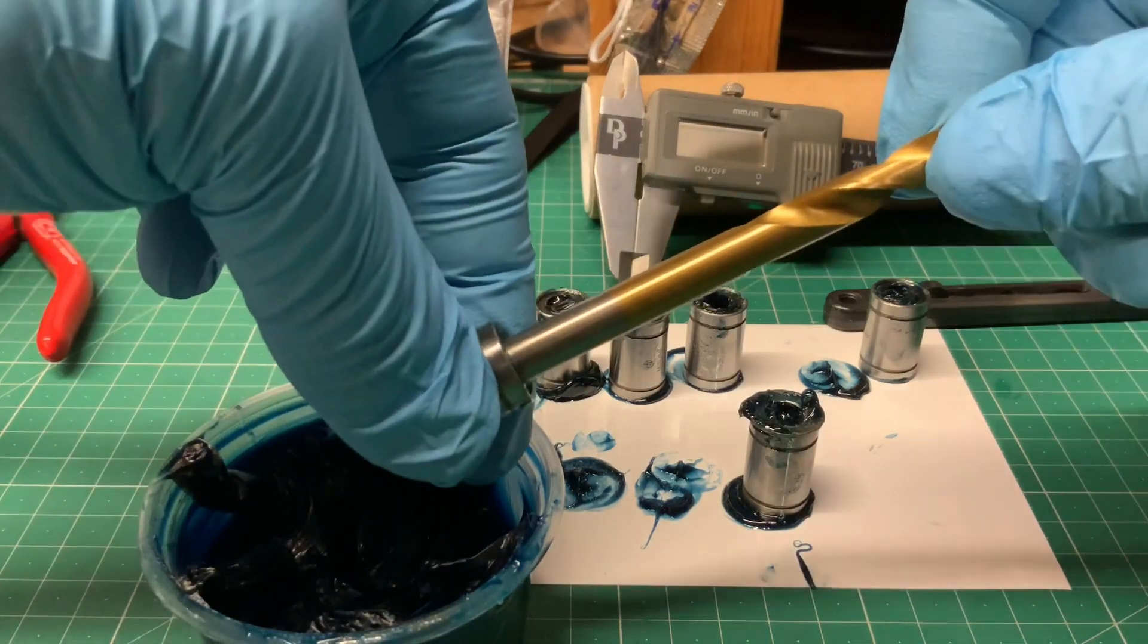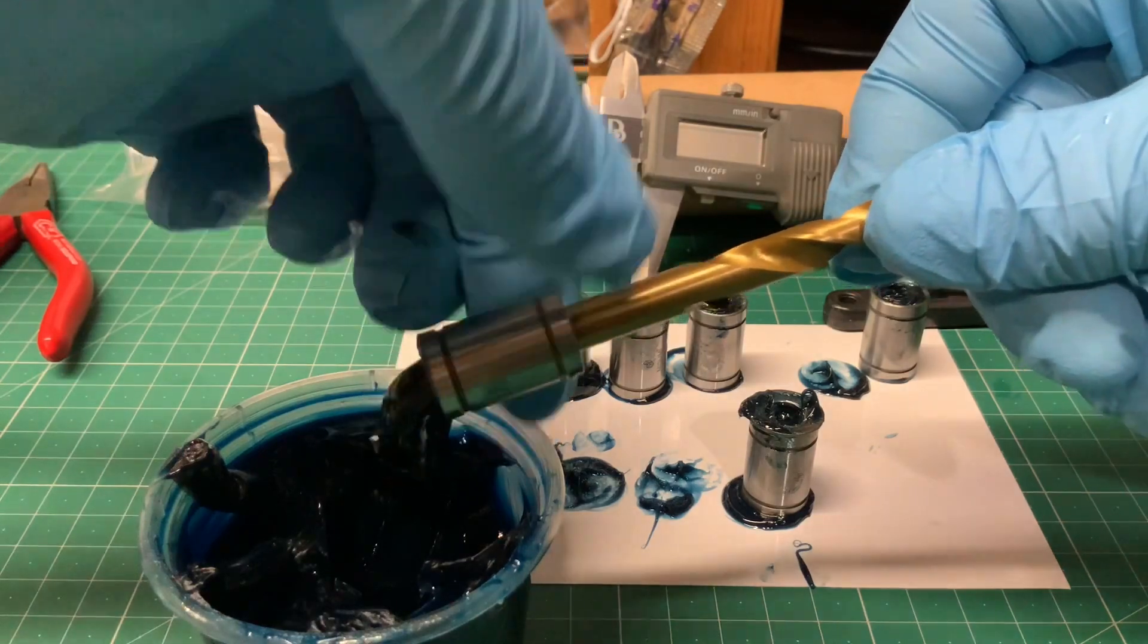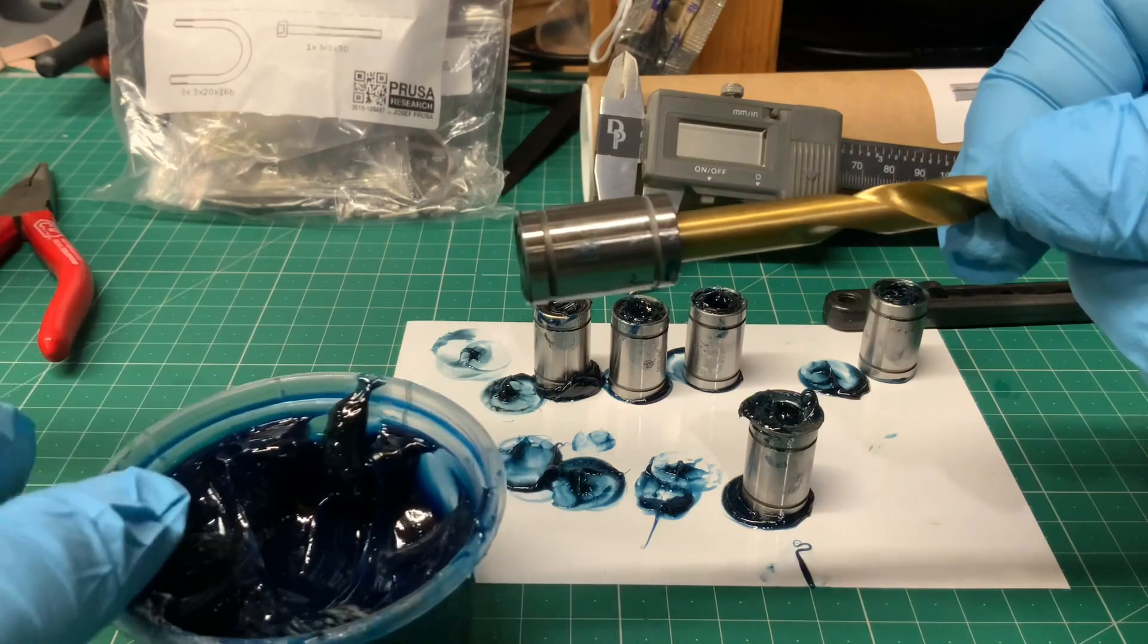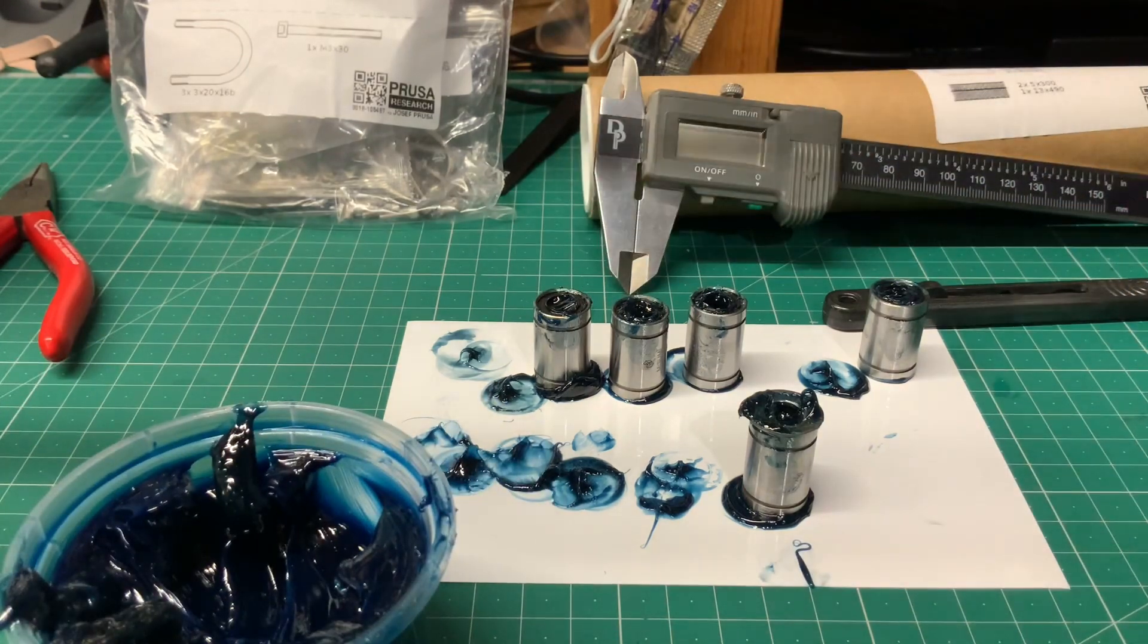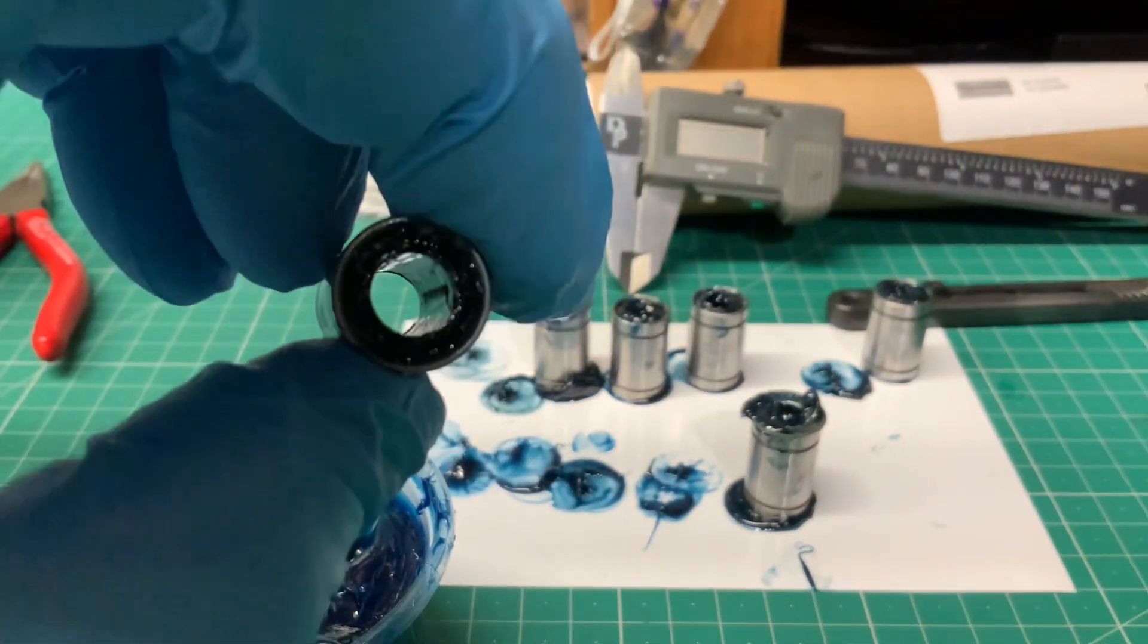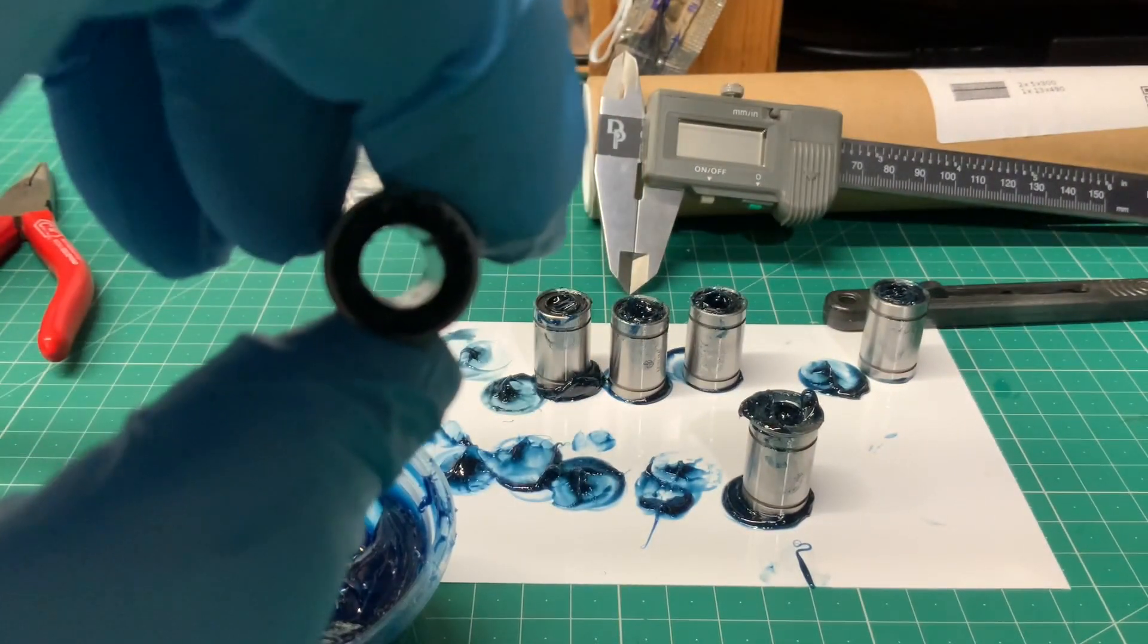Push it through nice and gently, a big blob of grease comes out the end. Wipe it off, job done. Bearing lovely and clean, all the rollers inside are packed full of grease. Perfect.